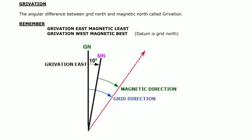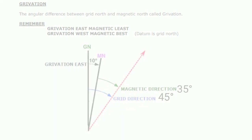For example, if grid direction is 45 degrees, then magnetic will be 45 minus 10, that is 35 degrees. So 35 degrees is less than 45, meaning grivation east — magnetic is less — meaning magnetic direction is less than grid direction.